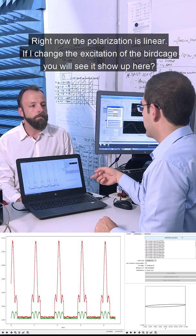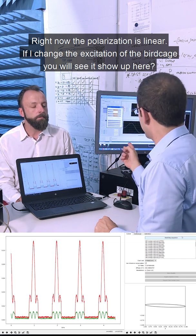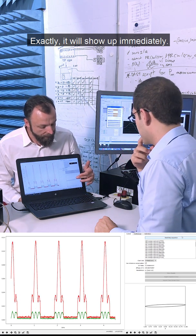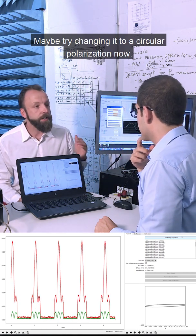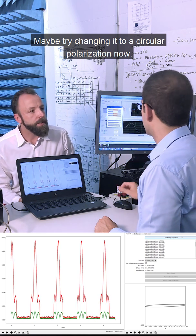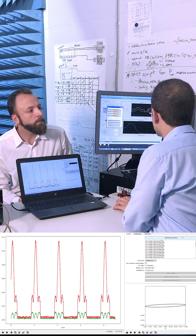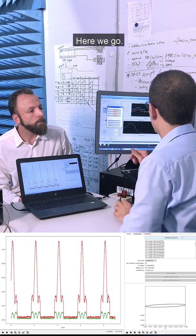So right now the polarization is linear. If I change the excitation of the birdcage you'll see it show up here? Exactly, it will show up immediately. Maybe try changing it to a circular polarization now. Okay. There we go.